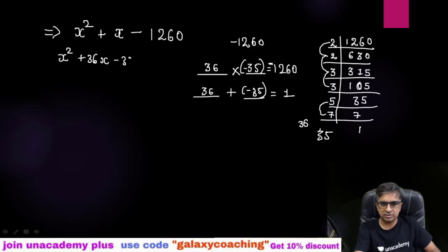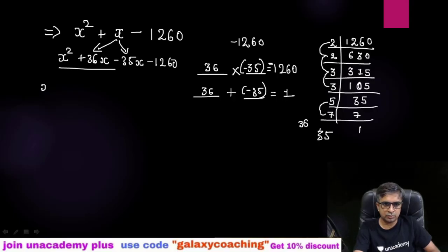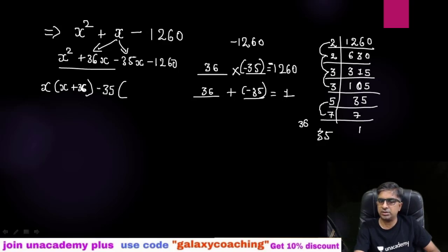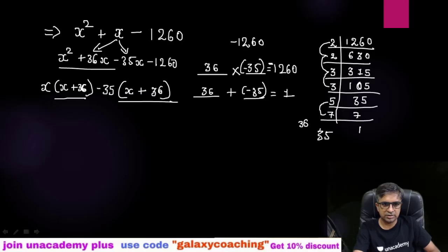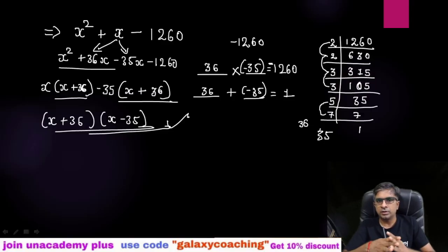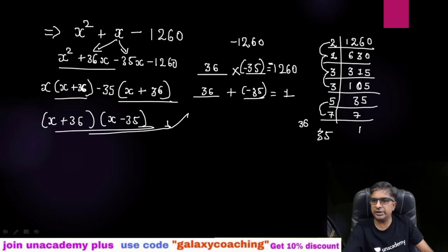Split the middle term: x² + 36x − 35x − 1260. Take x common: x(x + 36). Take −35 common from the last two terms (sign changes): −35(x + 36). So the factors are (x + 36)(x − 35). This way you can easily find the factors of any quadratic by splitting the middle term even when the terms are big.